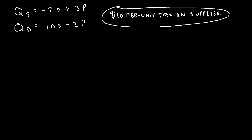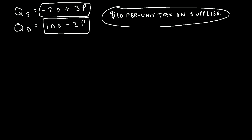Let's find the market equilibrium quantity and price before and after this tax has been imposed. First, let's find the market equilibrium quantity and price before the tax. To do that, all we have to do is set the market supply equation equal to the market demand equation, and we'll solve for p.